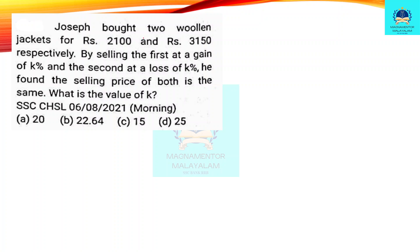Joseph brought two woolen jackets for Rs. 250 and Rs. 350 respectively. By selling the first at a gain of K percentage and the second at a loss of K percentage, he found the selling price of both to be the same. What is the value of K? This is an important question.